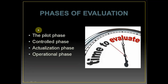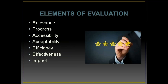The phases of evaluation are: the pilot phase, where the program is in a very nascent state; the control phase, where it is done on very few people with all elements involved; the actualization phase, where actual implementation happens; and the fully functional operational phase. The elements of evaluation include whether the program implemented is relevant, whether it is progressing toward desired goals, whether it is accessible and accepted by the people, whether it is efficient and effective, and whether it has any impact on desired goals.